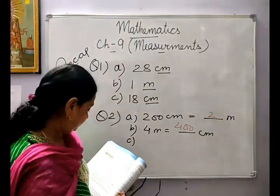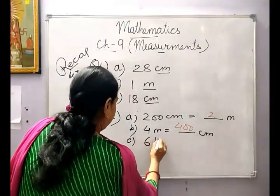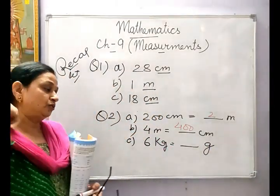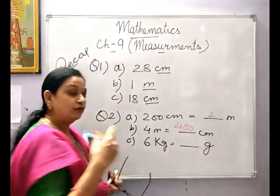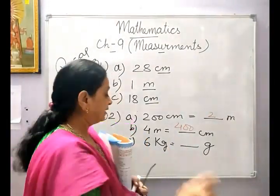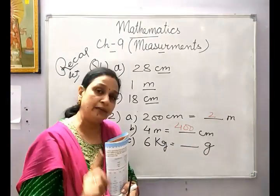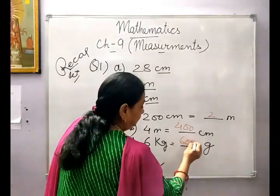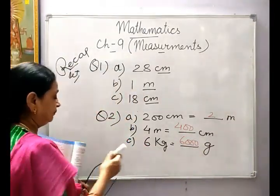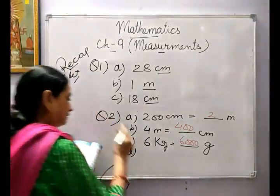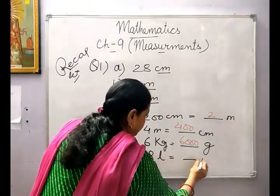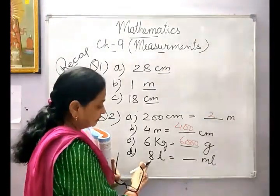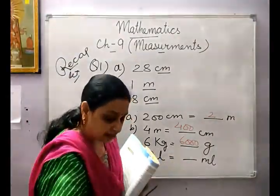C: 6 kg is equal to dash grams. Again, moving from kg to grams — higher to smaller unit — we multiply. In 1 kilogram there are 1000 grams, so we multiply by 1000. 6 into 1000 is 6000 grams. D: 8 litres is equal to dash millilitres — same, higher to smaller unit. 1 litre has 1000 millilitres, so we multiply 8 by 1000. The answer is 8000 millilitres.